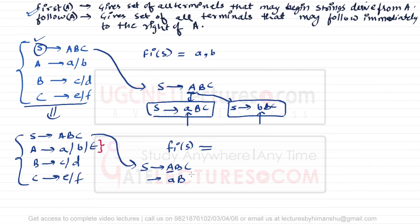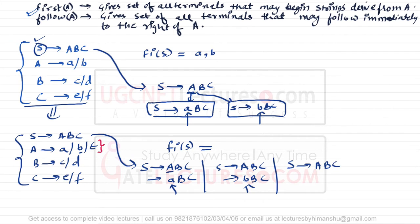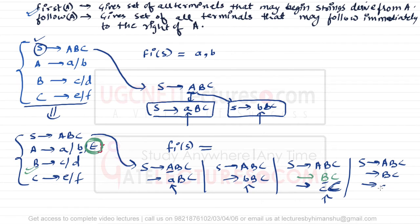If A is replaced by small a, strings start with a. If A is replaced by small b, strings start with b. But if A is replaced by epsilon, then B comes into play — B can be replaced by small c, so strings start with c, or by small d, so strings start with d. Therefore, since A contains epsilon, FIRST of S becomes {a, b, c, d}.